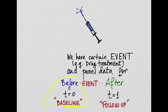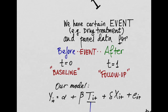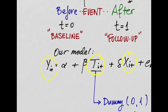And then we have data for after the treatment takes place, which is going to be t equals 1, the follow-up. We can use these two periods to estimate a model in which we try to come up with an estimate of the effect of the treatment on some outcome y, given that we have some other characteristics.